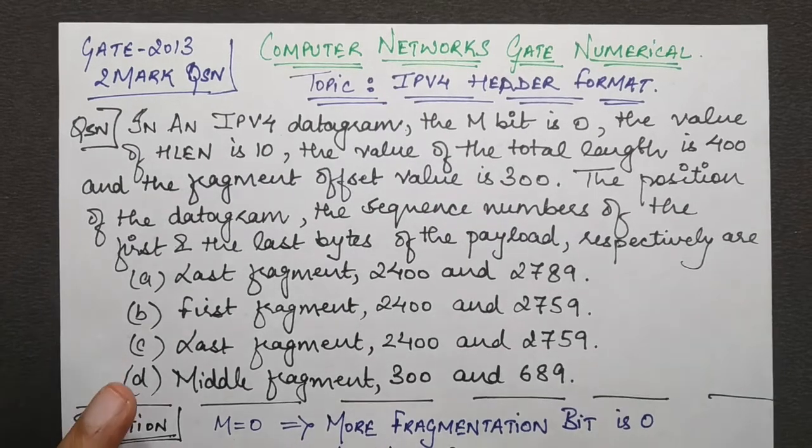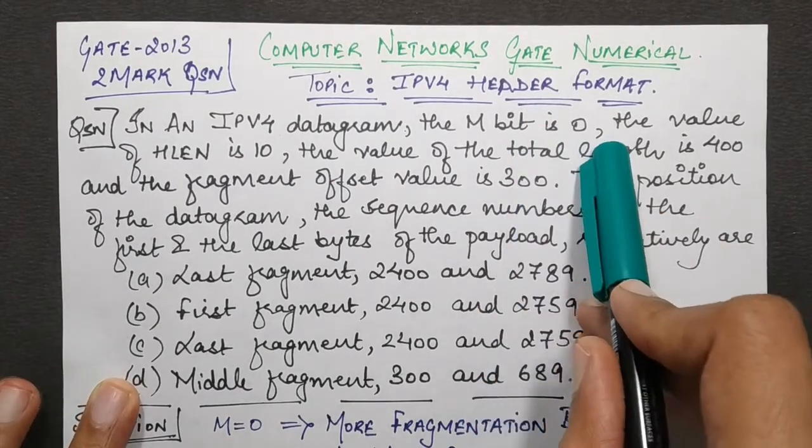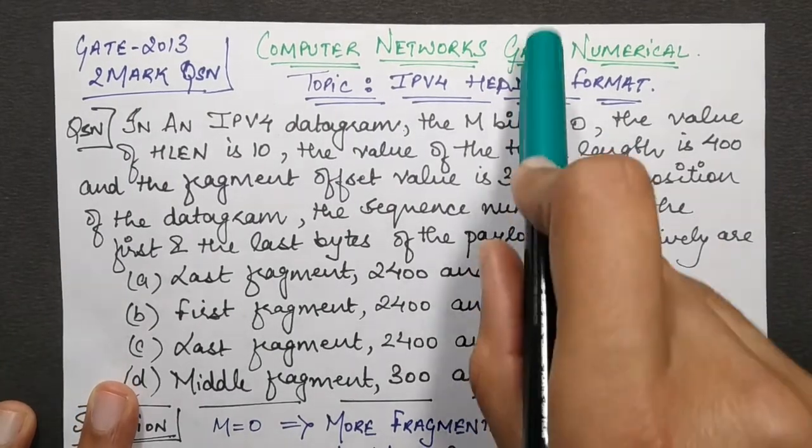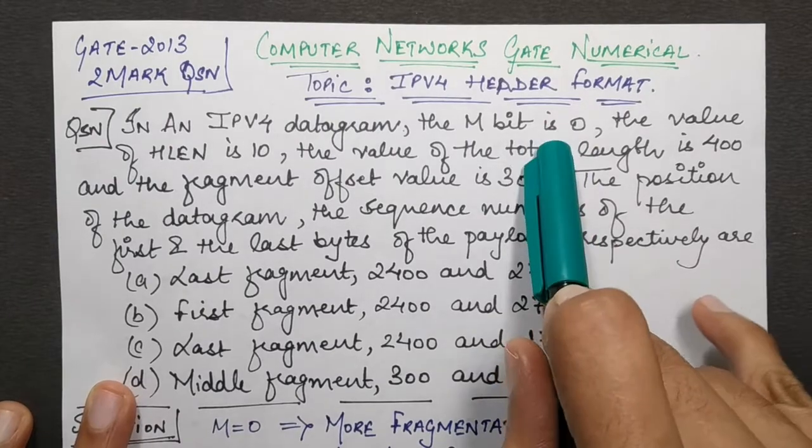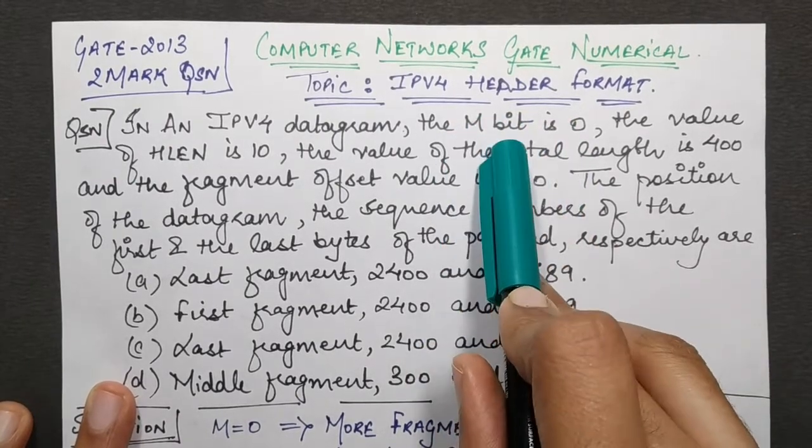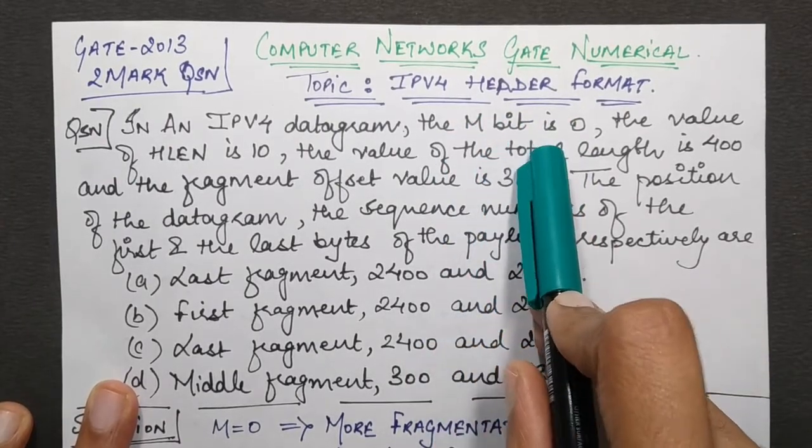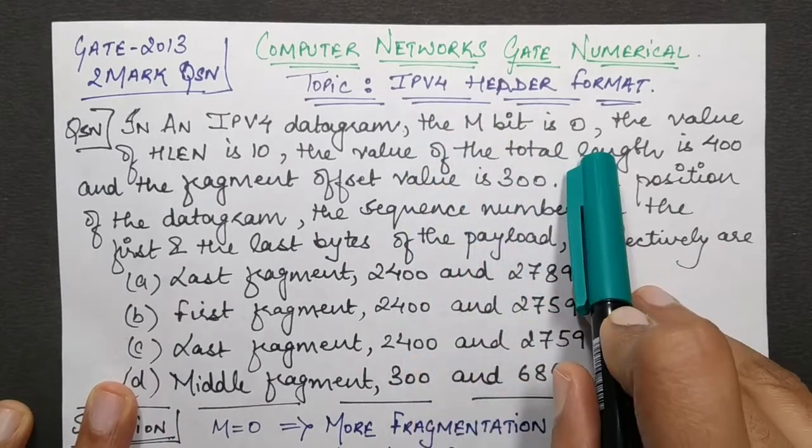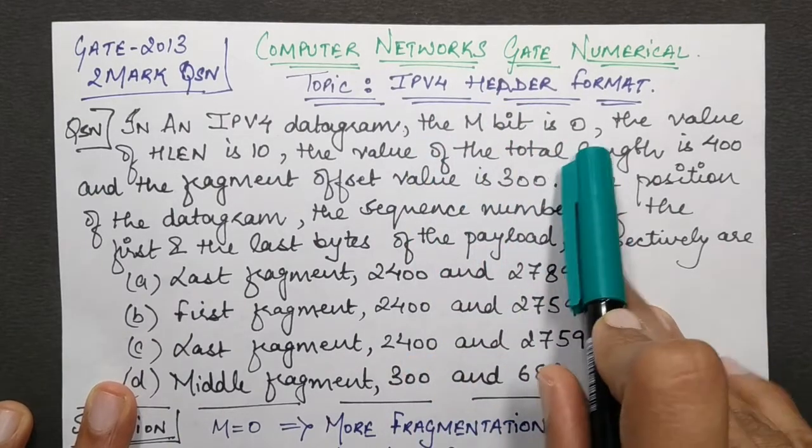Question says that in an IPv4 datagram, the M bit is 0. This is from the header format - M bit stands for More Fragmentation flag. So if it's 0, that means there are no more fragments.